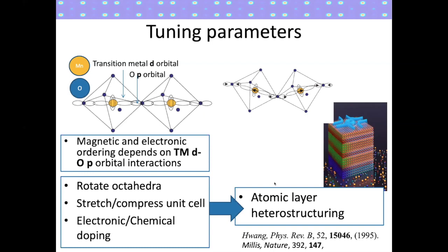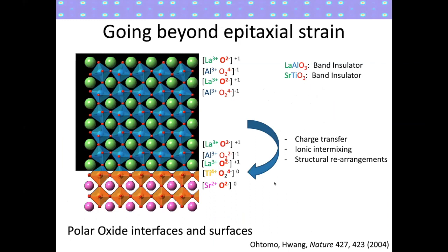The whole effect is that we can engineer the physical properties by these tuning parameters. Additionally, if we make multilayers of these materials with very thin films, we can create interfaces where the coupling can also lead to changes in the orbital overlap between the relevant orbitals in these systems.